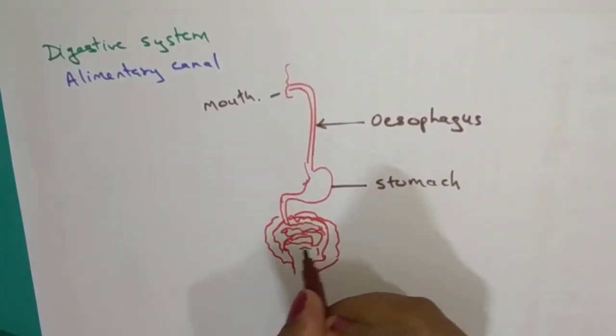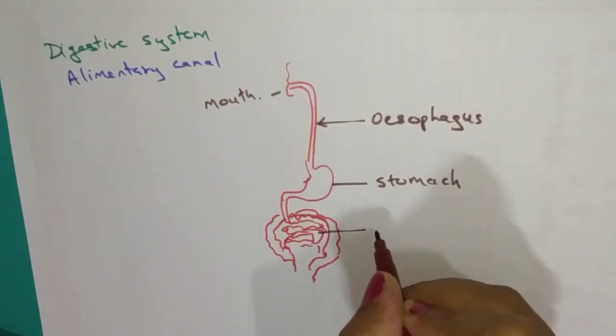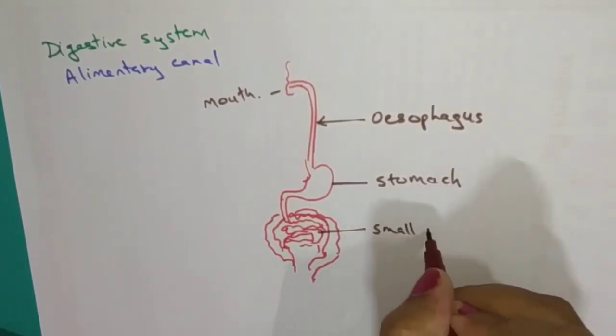Then, the coiled part inside, this is called as small intestine.